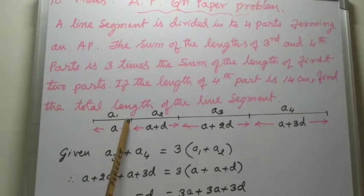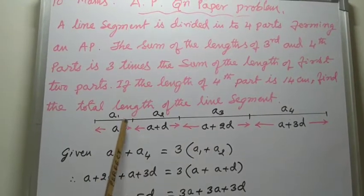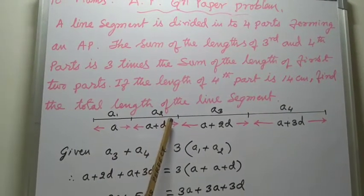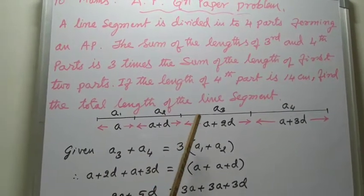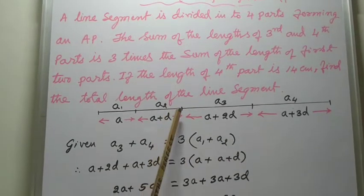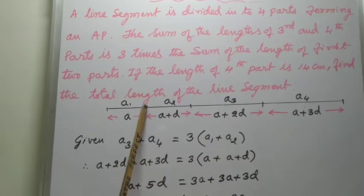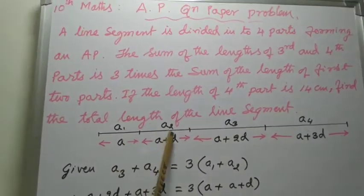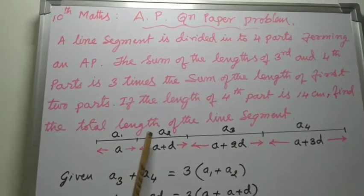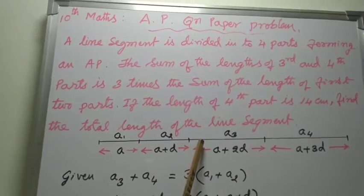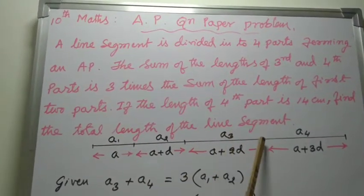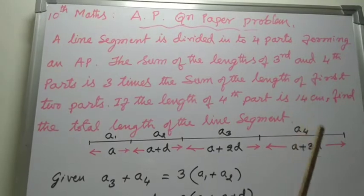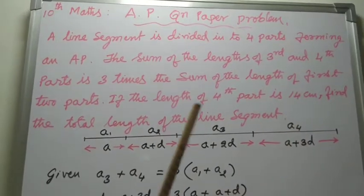If this is the length of the first part, then each subsequent part increases by the common difference. Let it be more — then this is A2, which is more than the first. And again, this is A3 and this is A4. So four parts are divided.